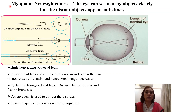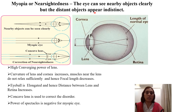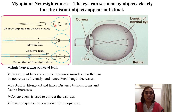The first defect is called myopia or nearsightedness. The name itself tells us that the person can see only nearby objects clearly, but distant objects will not be seen clearly or distinctly. Looking at the diagram, for nearby objects the required changes in focal length are brought about by the eye lens — it decreases the focal length and the image is formed on the retina. So nearby objects can be seen clearly by the myopic eye.